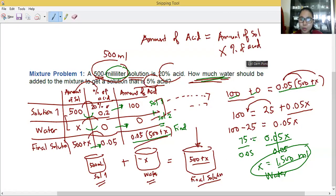We subtract to get 75. Then we divide both sides by 0.05. So our answer is 1,500 ml. Please do not forget to write the unit of measurement. The water added is 1,500 ml.